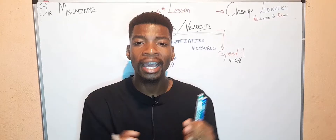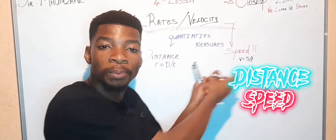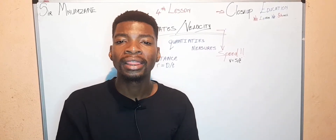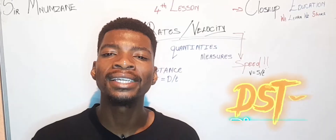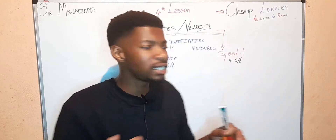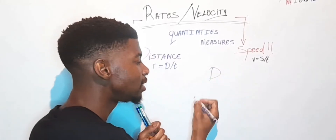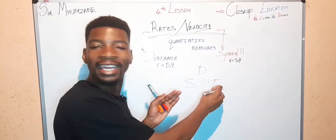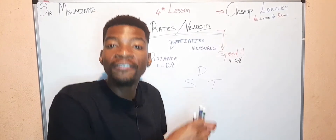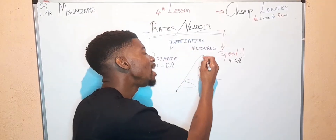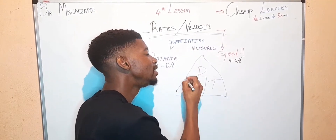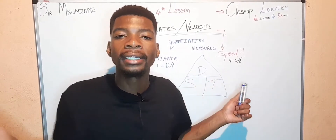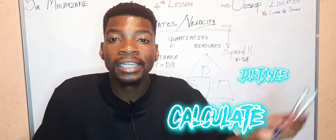How do we calculate distance, speed, or even time? We use a diagram that my teacher used to call the DSTV diagram. Why DSTV? Because it has D for distance, S for speed, and T for time — DSTV. How do you use the DSTV diagram to calculate distance, speed, or even time?